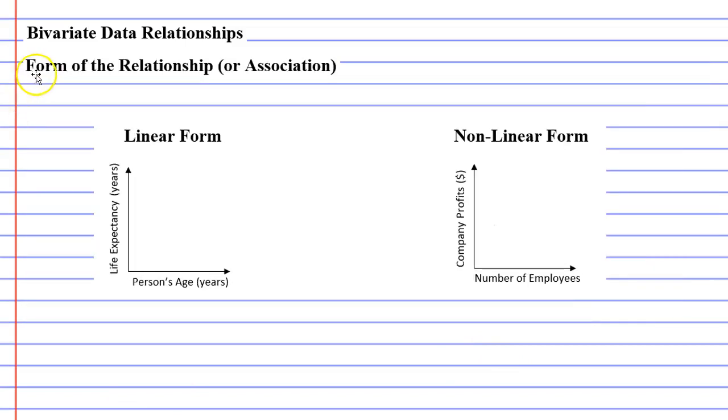The next thing we're going to look at is called the form of the relationship or the form of the association. So we have what's called linear form and non-linear form. We're going to compare a person's age to their life expectancy. The younger a person is, the longer their life expectancy will be, meaning they've got more years of life left in them.